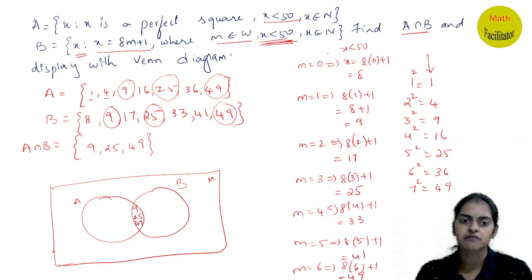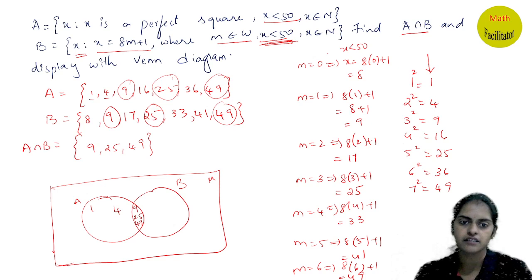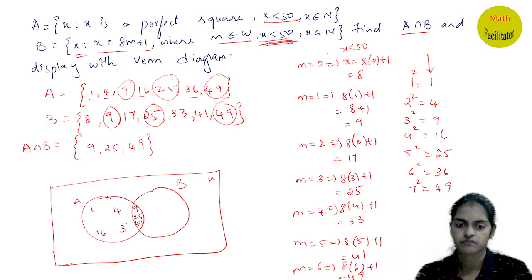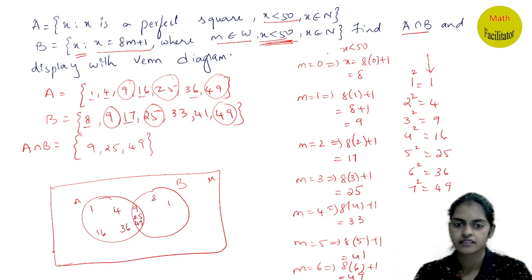In the Venn diagram, common elements 9, 25, 49 go in the middle overlapping region. Elements only in A — 1, 4, 16, 36 — go in the A-only region. Elements only in B — 17, 33, 41 — go in the B-only region.